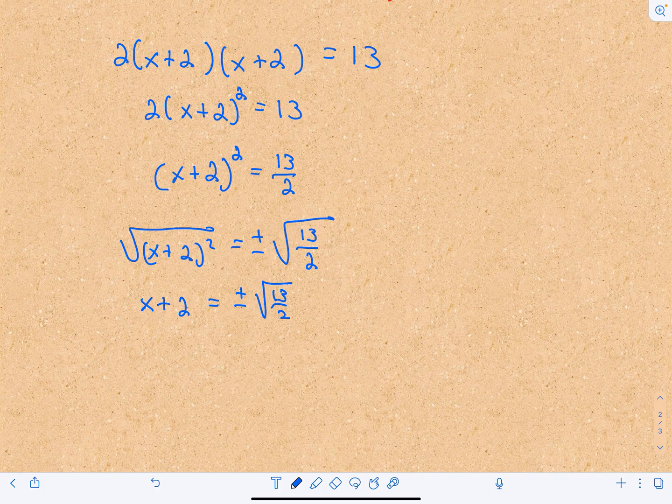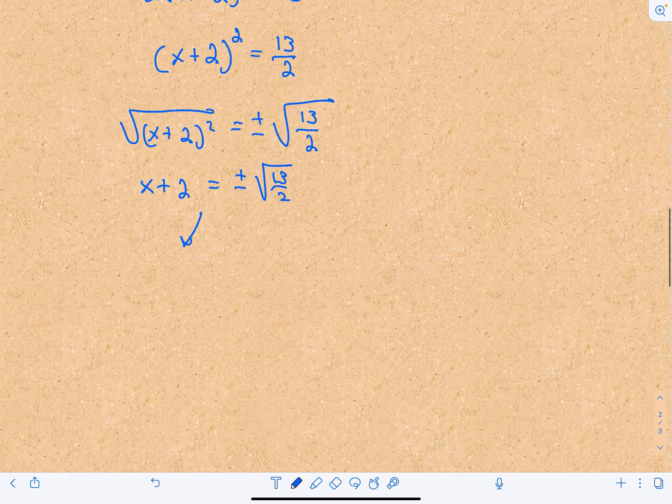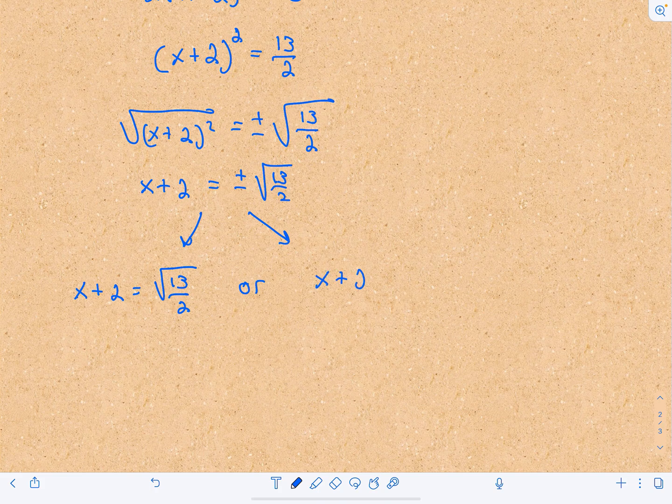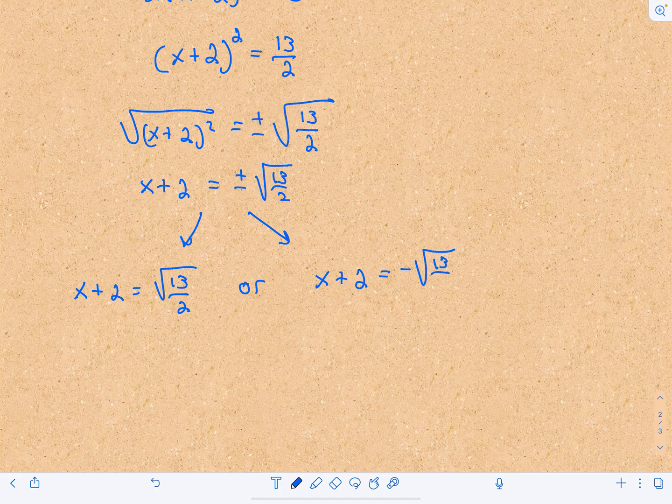This gives us our two solutions. We have x + 2 = √(13/2), or our other solution is when x + 2 = -√(13/2).